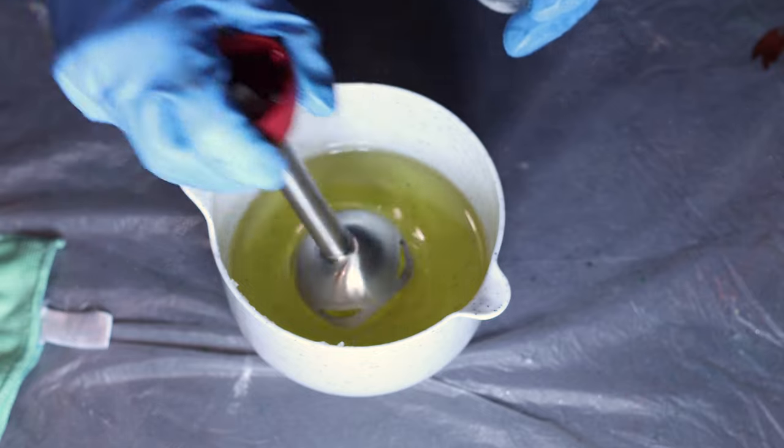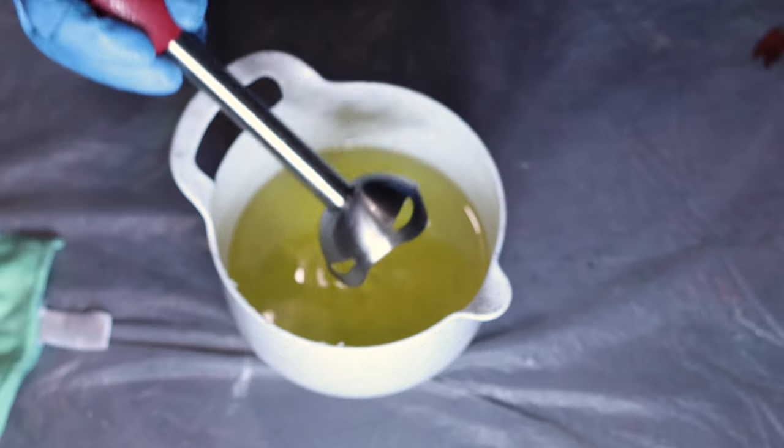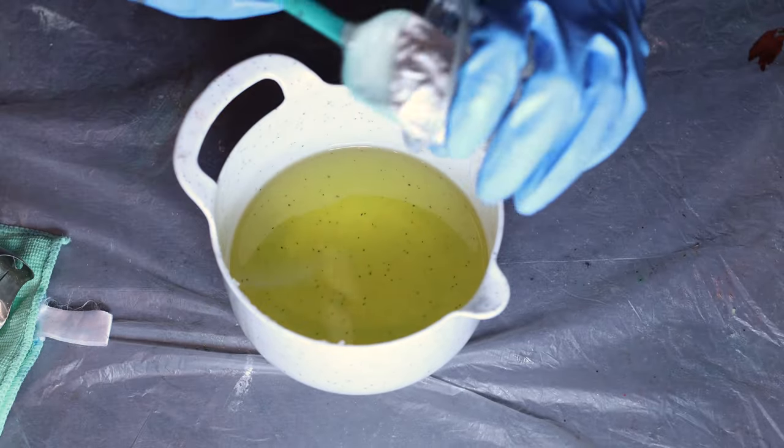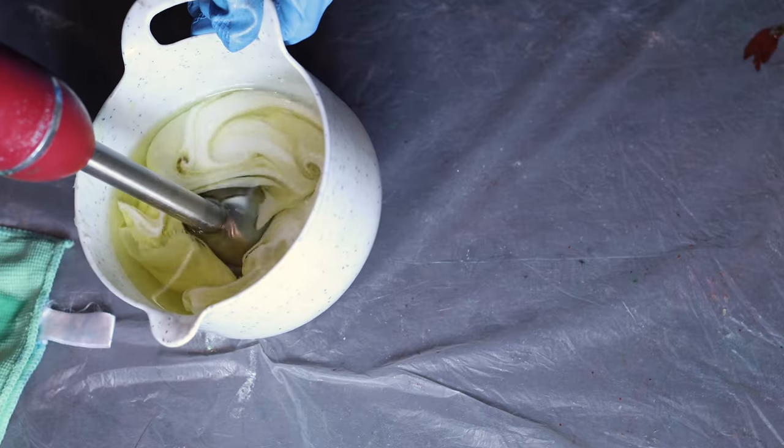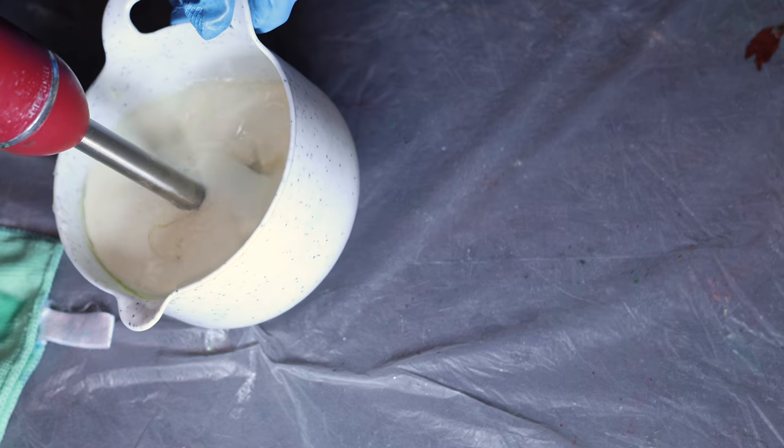While my loaf transforms from cursed custard to baneful butter, I'm gonna prepare my frosting. Since it's one color all the way through, I'm just adding the rest of my titanium dioxide pudding and blending it into the oils with my stick blender so it's nice and uniform.